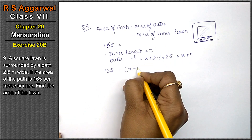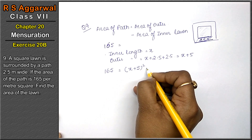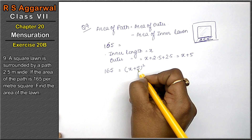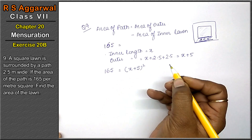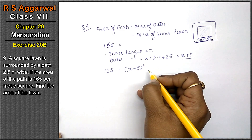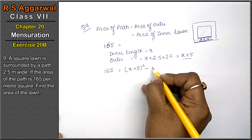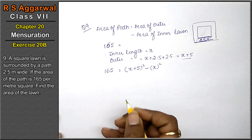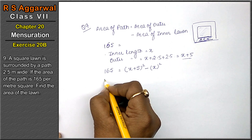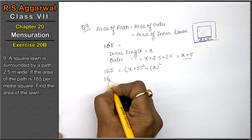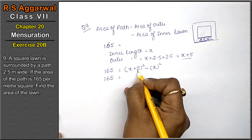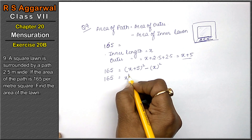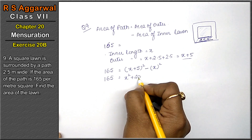Let the inner side be x. Then outer side is x plus 5, so outer area is (x+5) whole square, and inner area is x squared. Using the formula: (a+b)² = a² + b² + 2ab, we expand (x+5)².